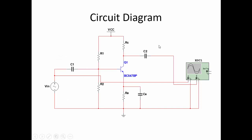This is the common emitter amplifier configuration circuit diagram. The common emitter amplifier uses an NPN transistor. The input signal is given to the base of the transistor, the output signal is measured at the collector terminal, and the emitter terminal is grounded — that is why it is a common emitter configuration.